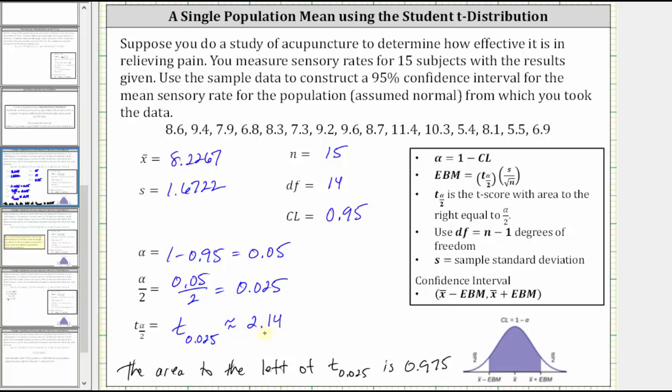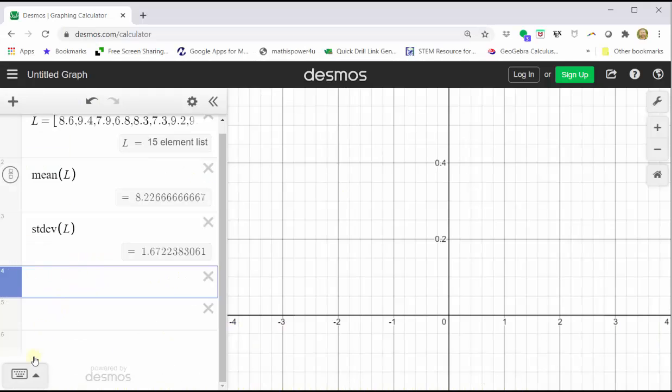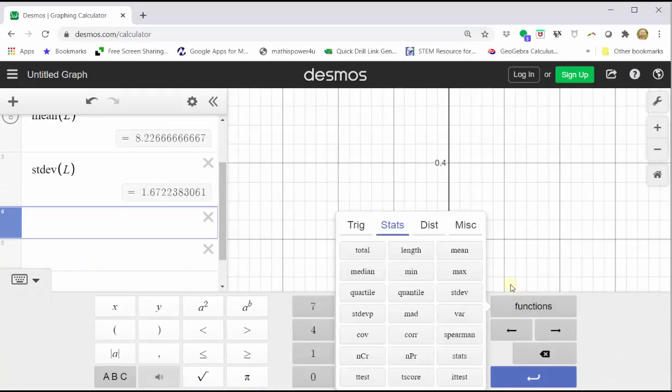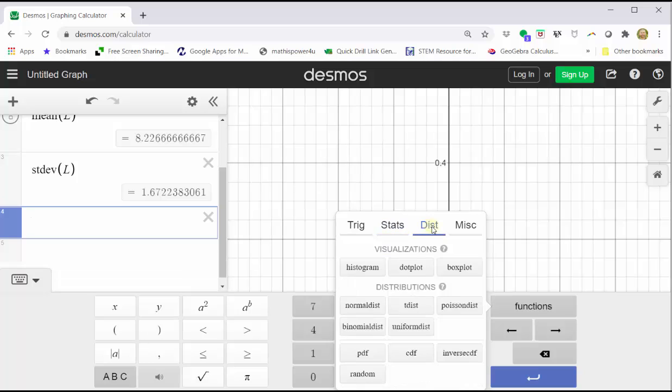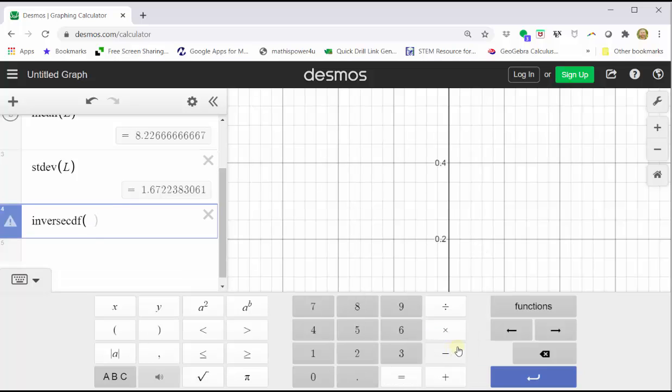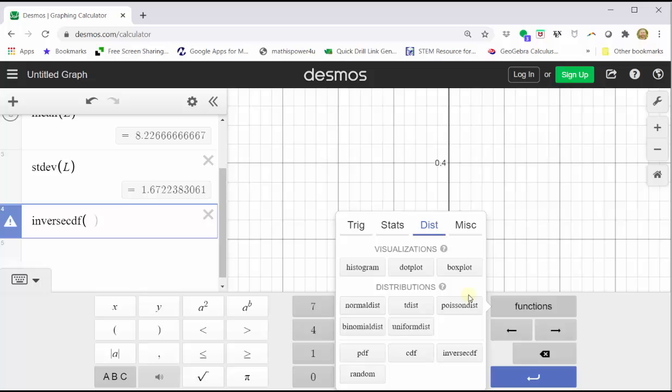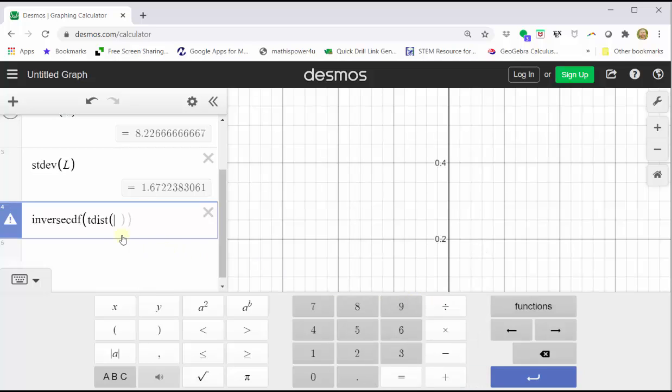Let's show how to get the t-score using Desmos. Open the Desmos keypad. Click functions. Click the distributions tab, click inverse CDF, click functions, click t-distribution. Enter the degrees of freedom, 14. Right arrow, comma, area to the left, which is 0.975, we do get the same t-score.